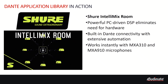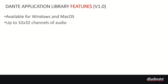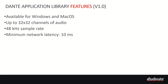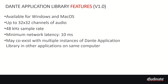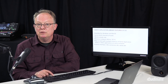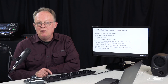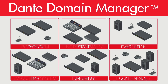Since I'm speaking with developers, let's run down a few of the features of Dante Application Library. It's available for Windows and macOS and provides up to 32 bi-directional channels of audio. It uses a 48 kHz sample rate and has a minimum network latency of 10 milliseconds. It can coexist with other instances of Dante Application Library running in other applications on the same computer. For control interfaces, we provide the Dante Application Library API and the Dante API for external control. And keeping our promise of 100% interoperability, it works with all Dante-enabled products and tools, including Dante Domain Manager.